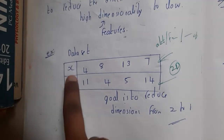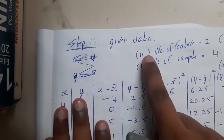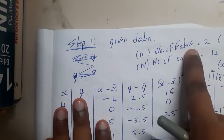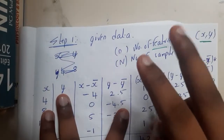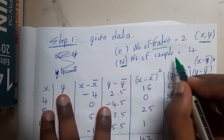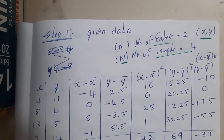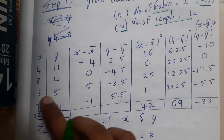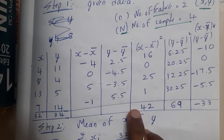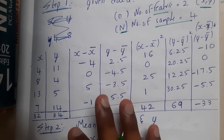So we have X and Y. The first step is, for the given dataset, identify the number of features. Features are nothing but X and Y, so we are having two features. Capital N indicates the number of samples — here we are having four sample data. Then draw this table. These values we will be using in multiple formulas, that is the only reason why I am asking you to draw it now.